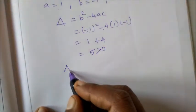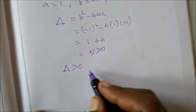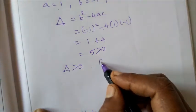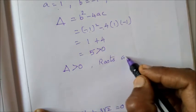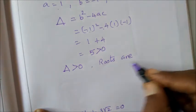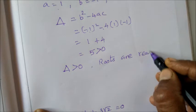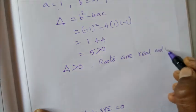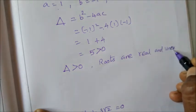That is delta is greater than 0. Delta greater than 0 means roots are real and unequal.